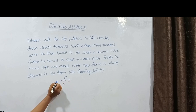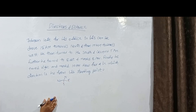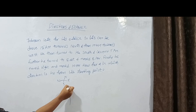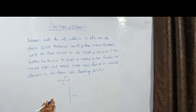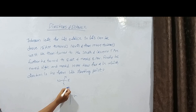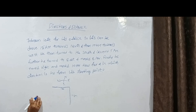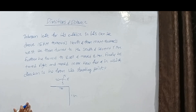The regular process is the same. We draw these directions: North, South, East and West. Johnson left for his office and drove 15 km towards North. Then 10 km towards West. He then turned to South and covered 5 km.